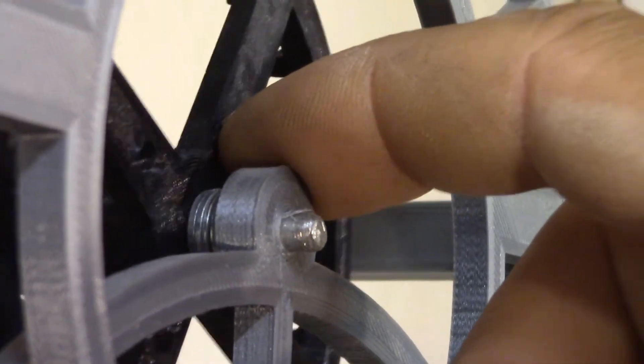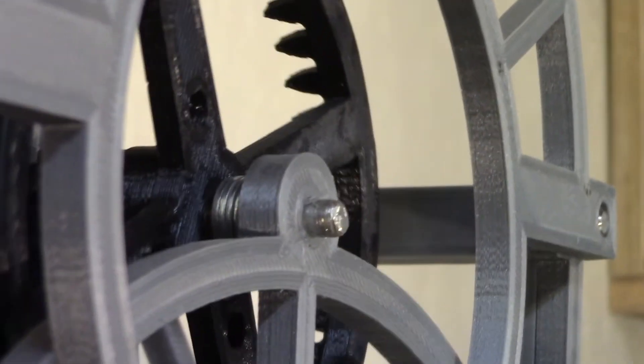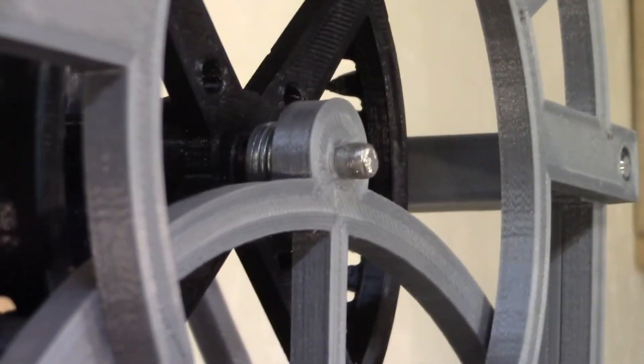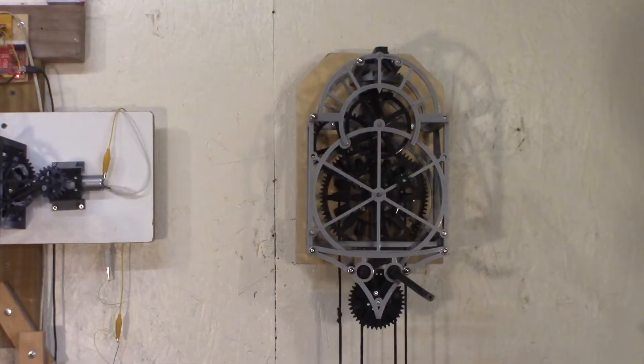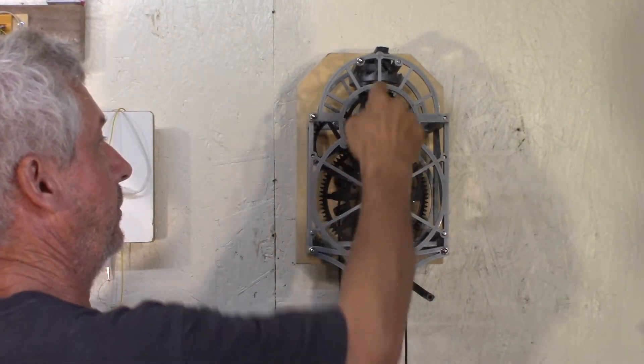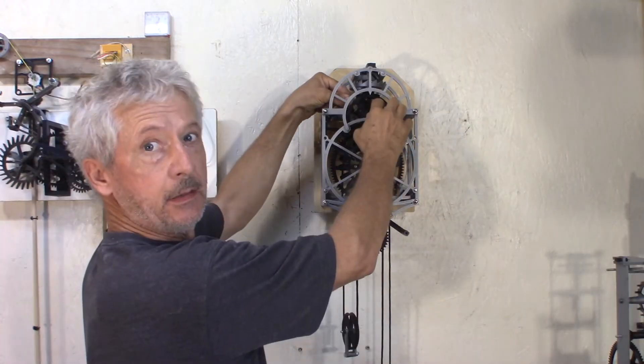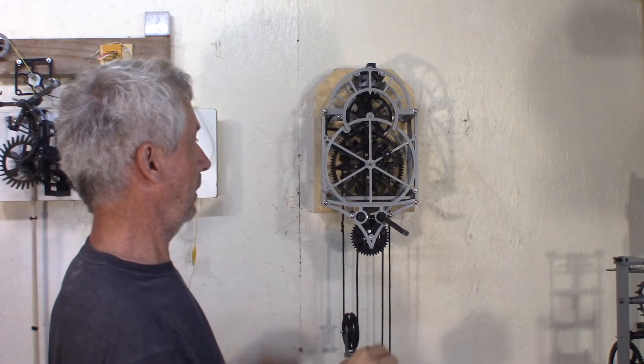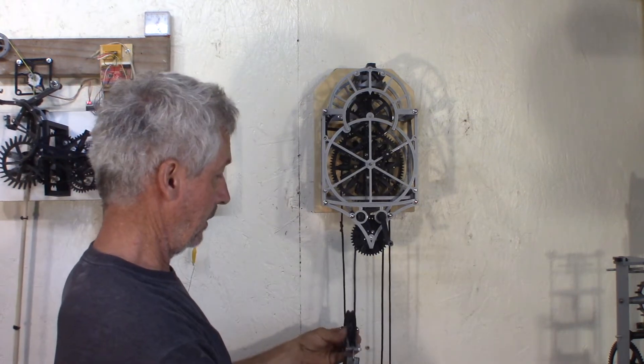So back again, I need to undo the front, put the washer in. This time I think I have the distance right. Put that back.